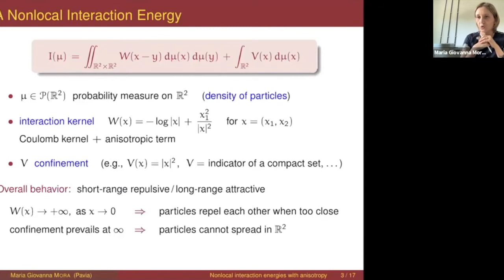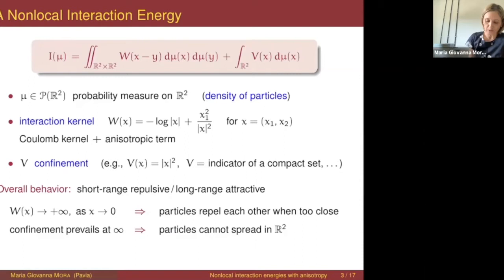At infinity, what prevails in the energy is the confinement V, and this prevents particles from spreading around in the plane. So the overall behavior of the energy turns out to be repulsive at short distances because of the logarithmic singularity and attractive at larger distances because of the confinement.